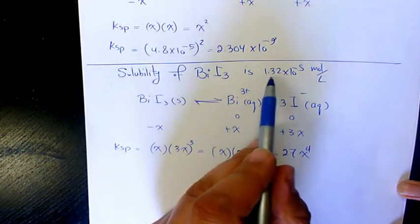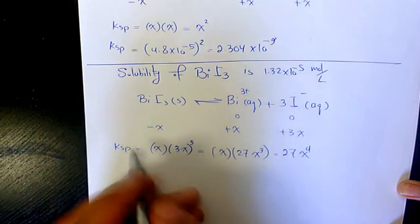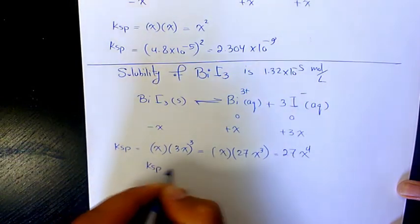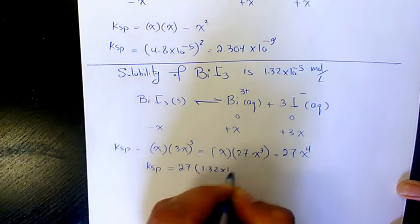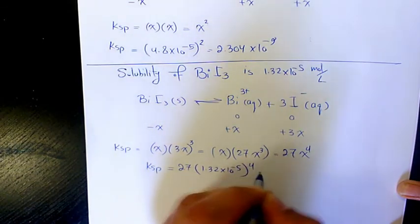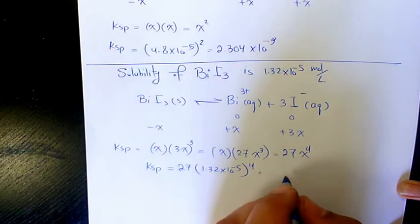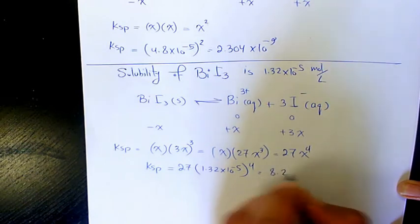X is given, which is 1.32 times 10 to the power of negative 5. So Ksp will be 27 times 1.32 times 10 to the power of negative 5 to the power of 4. When you calculate it, that's gonna be 8.2 times 10 to the power of negative 19.